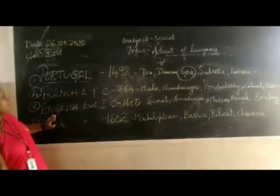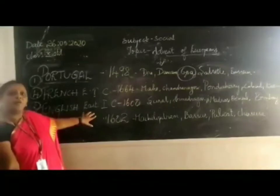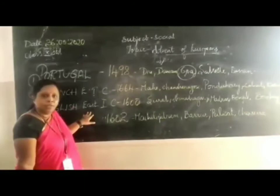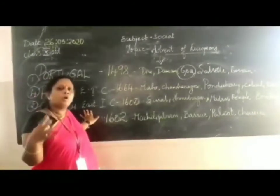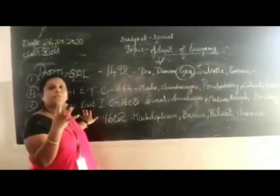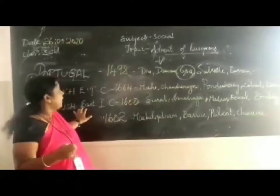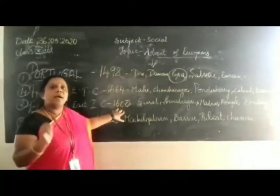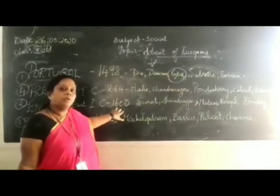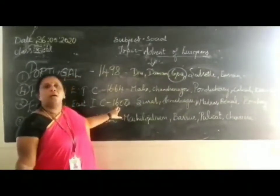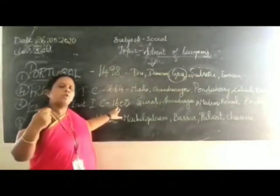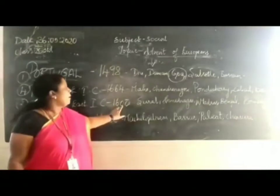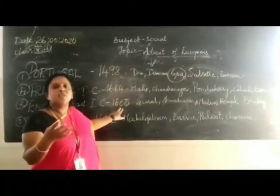Next, the second European power in India was the English East India Company. The English were very powerful and were expanding colonies in many parts of the world. Their entry into India was not easy, because the Mughals were ruling India and they had to get permission from the Mughal rulers. The first person who obtained permission to trade was Thomas Roe. He came and established trading centers in India.